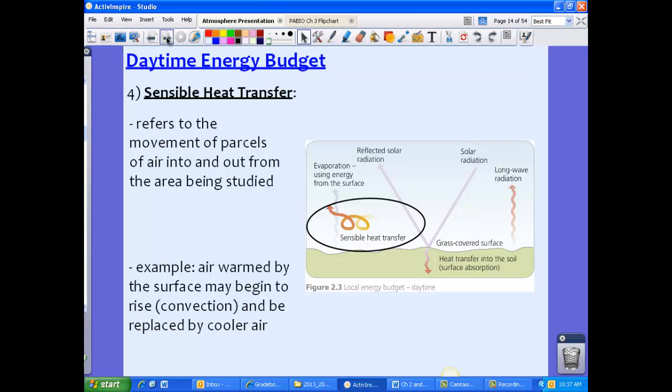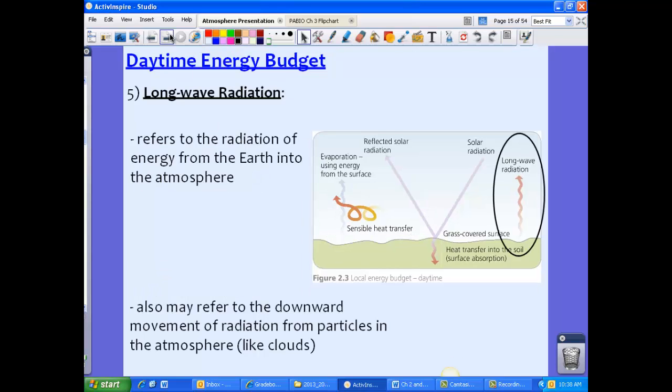Our fourth component is something called sensible heat transfer. Now this refers to the movement of parcels of air into and out from the area being studied. Basically, this is the normal stuff that goes on in the atmosphere. So for example, if the air is warmed by the surface, this air might begin to rise through convection and it's going to be replaced by cooler air. So whatever happens normally, if an air surface becomes warmer or cooler, it's going to move away or come in, this is the normal stuff. This is the sensible heat transfer. This is the stuff that normally happens in the day-to-day.